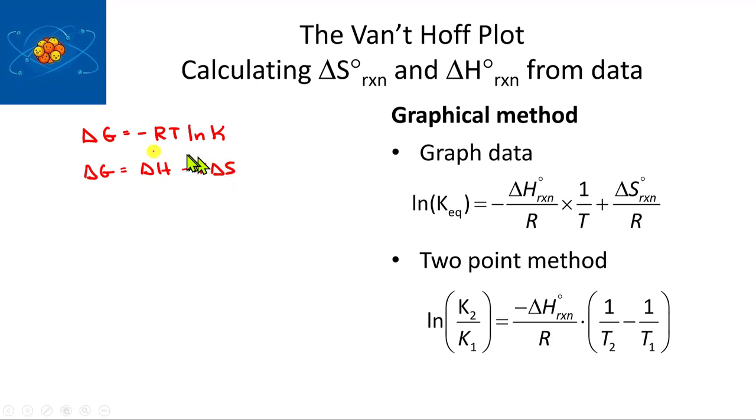What people really do is just equate these two to each other. So minus RTlnK is equal to delta H minus T delta S. Then they'll divide both sides by minus RT. The T's will cancel for delta S, and the minus RTs will cancel.